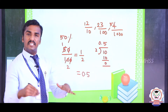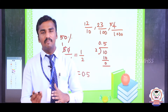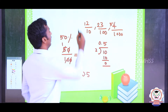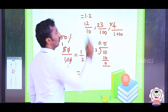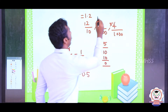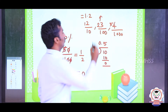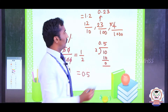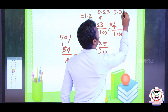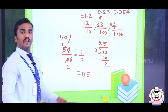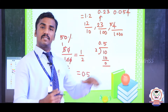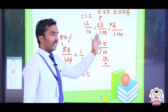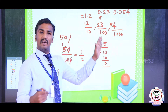Decimal fraction converting into decimal value: 12 by 10 equals 1.2. 22 divided by 100 equals 0.23. 54 divided by 1000 equals 0.054. Decimal fraction means the denominator's value is 10, 100, 1000, or 10,000.